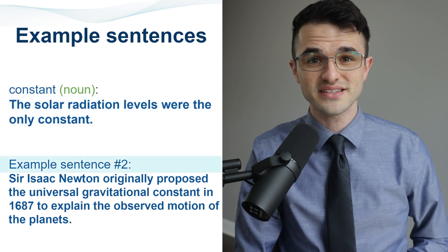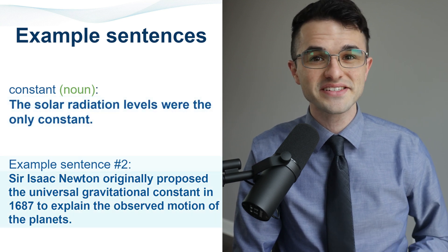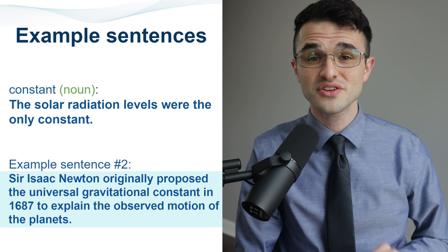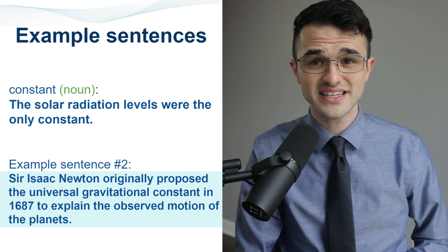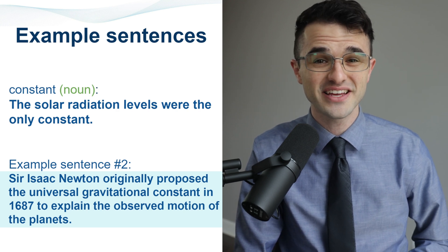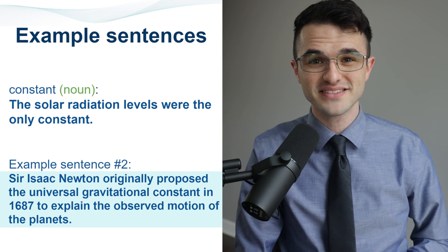Example sentence number two. Sir Isaac Newton originally proposed the universal gravitational constant in 1687 to explain the observed motion of the planets.